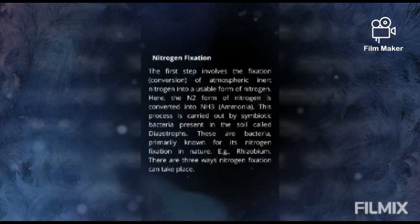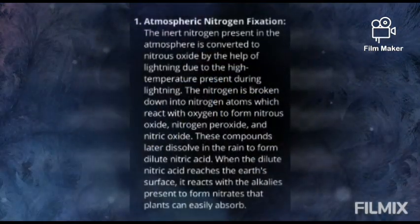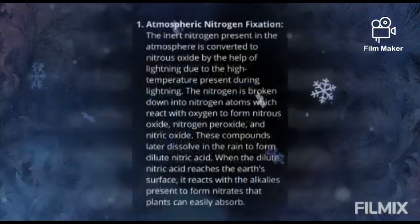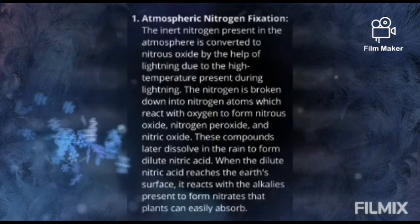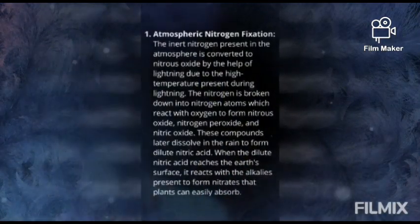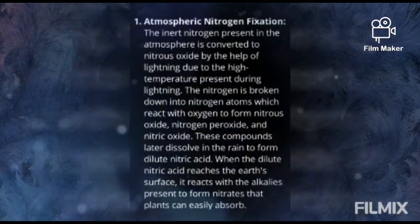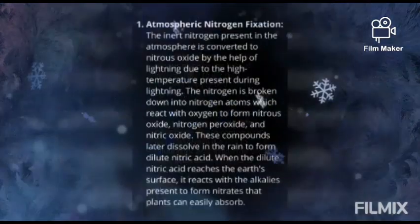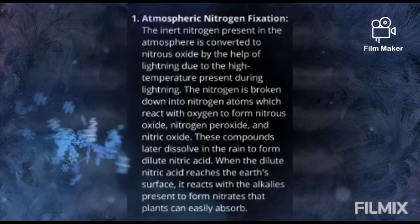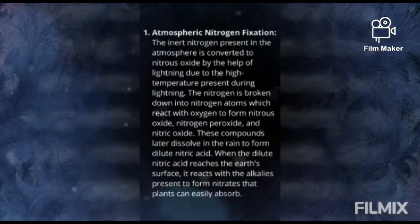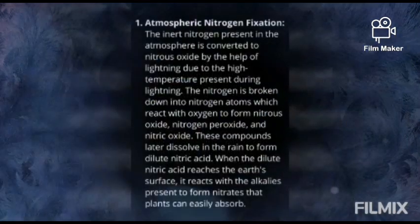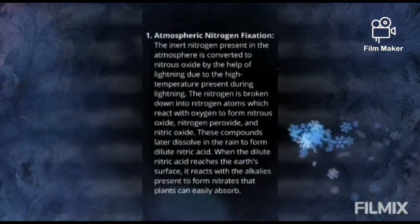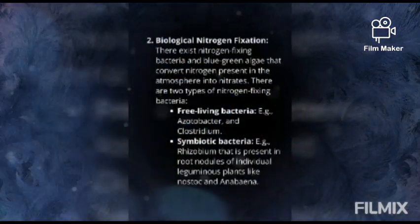There are three ways nitrogen fixation can take place. First, atmospheric nitrogen fixation: the inert nitrogen in the atmosphere is converted to nitrous oxide by lightning. Due to the high temperature during lightning, nitrogen is broken down into nitrogen atoms which react with oxygen to form nitrous oxide, nitrogen peroxide, and nitric oxide. These compounds later dissolve in rain to form dilute nitric acid, which when it reaches Earth's surface reacts with alkaline soil to form nitrates that plants can easily absorb.